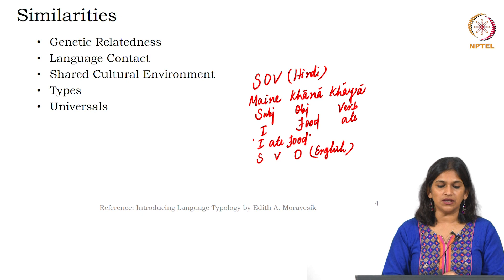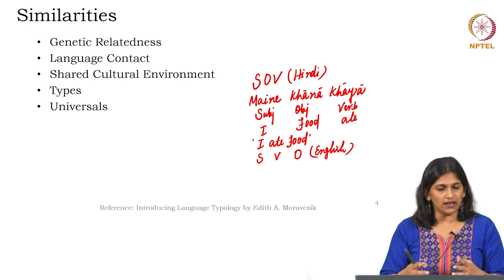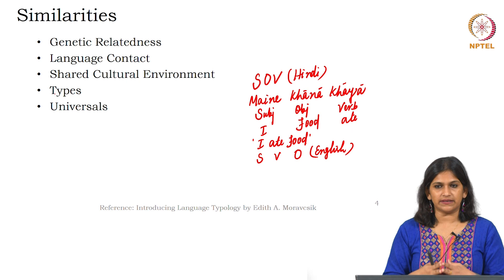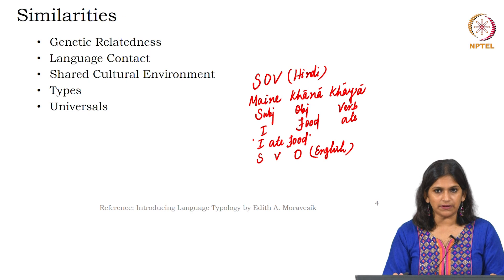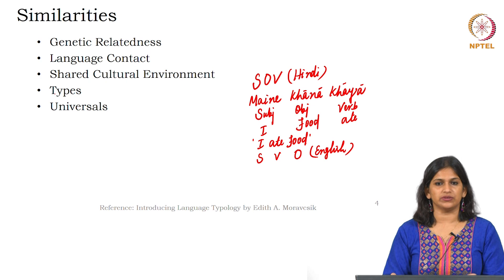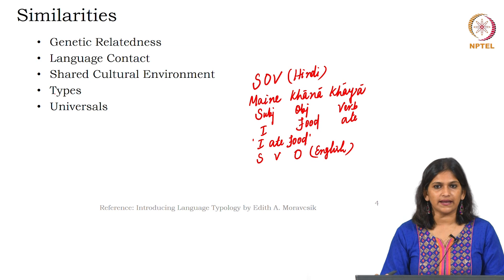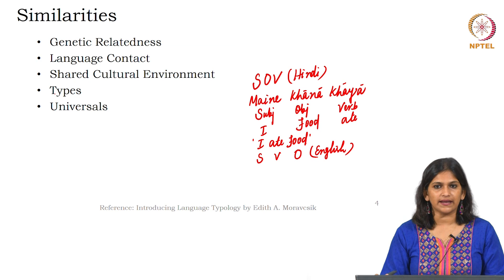The third reason is the shared cultural environment. If two communities have cultural similarities, that will have an impact on both their languages. The cultural similarity will result in linguistic or speech similarity. If two different speech communities have a shared cultural linkage, then very likely you are going to find some linguistic similarities between them.